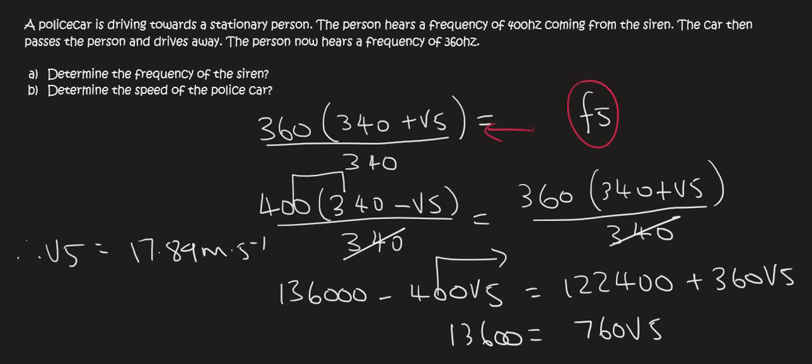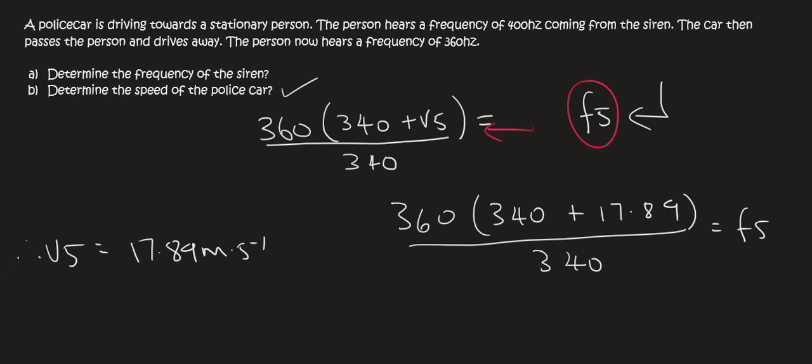Now to find the frequency, because I've actually answered question B, to find the frequency, you just substitute it back into this equation. And so there we plug that in over there, and then you just type all of that in on the calculator. And so we end up with 378.94 Hz. So it makes sense that the frequency of the actual siren is somewhere between 360 and 400.